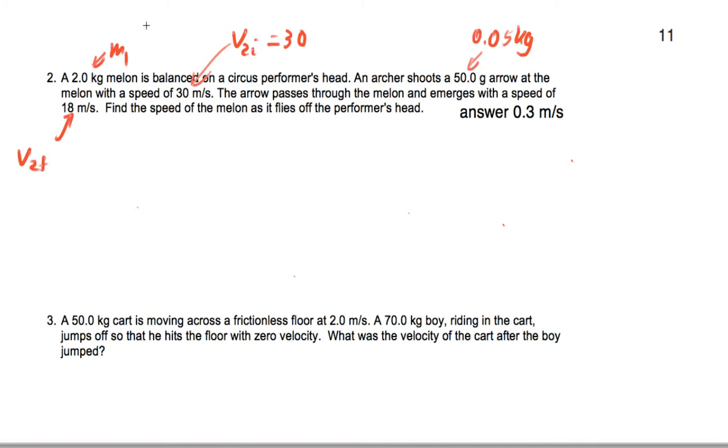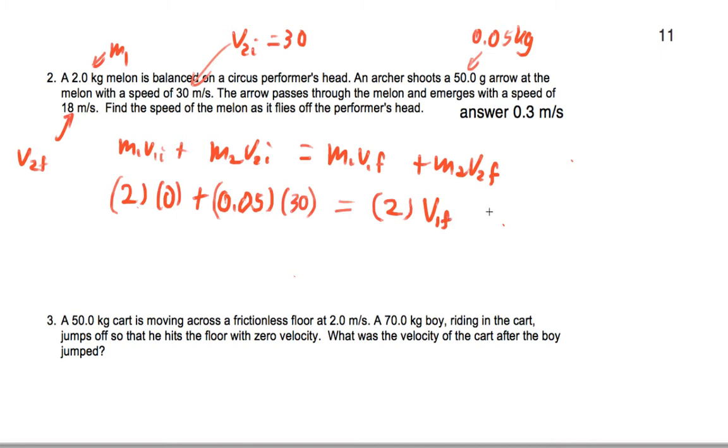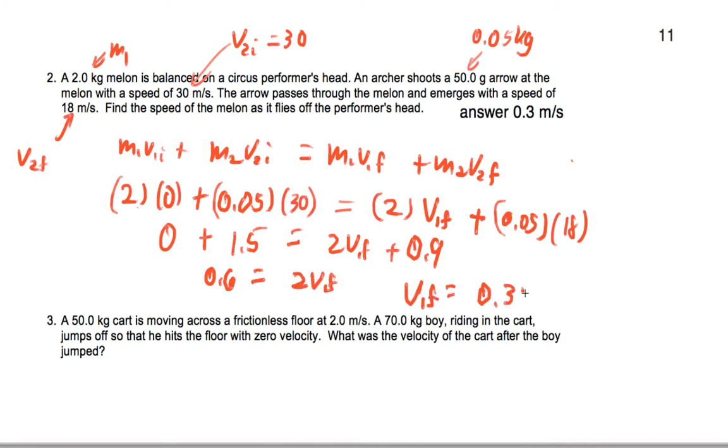Now I gave you an answer key for this, so let's just work out and confirm the answer. So we have M1V1 initial plus M2V2 initial equals M1V1 final plus M2V2 final. So we end up getting here 2 kilogram melon moving at zero. We have this arrow going at, well it has a mass of 0.05 kilograms, and it's initially shot at 30 meters per second. It hits the melon that has an unknown final speed, and it emerges from the melon, the arrow does, 0.05, with a speed of 18 meters per second. So let's go ahead and simplify. What we're going to end up getting here is 0 plus 1.5 equals 2V1F plus 0.9. We end up getting 0.6 equals 2 times V1 final. So the final speed of the melon is in fact 0.3 meters per second.